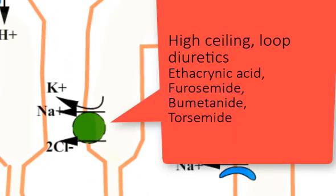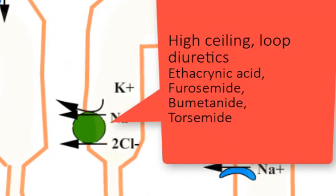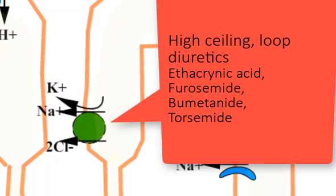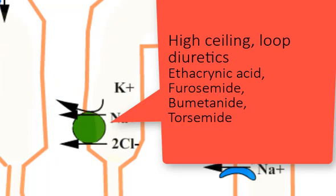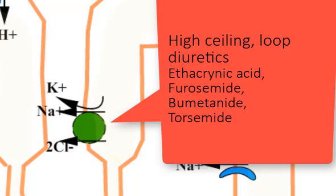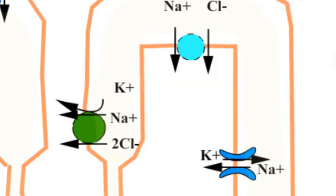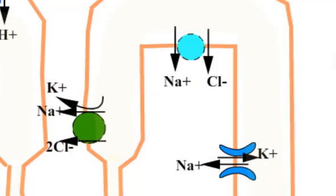The thick ascending limb of the loop of Henle is the site of action of high ceiling or loop diuretics like ethacrynic acid, furosemide, bumetanide, and torasemide. This segment has a high capacity for absorbing sodium and chloride.